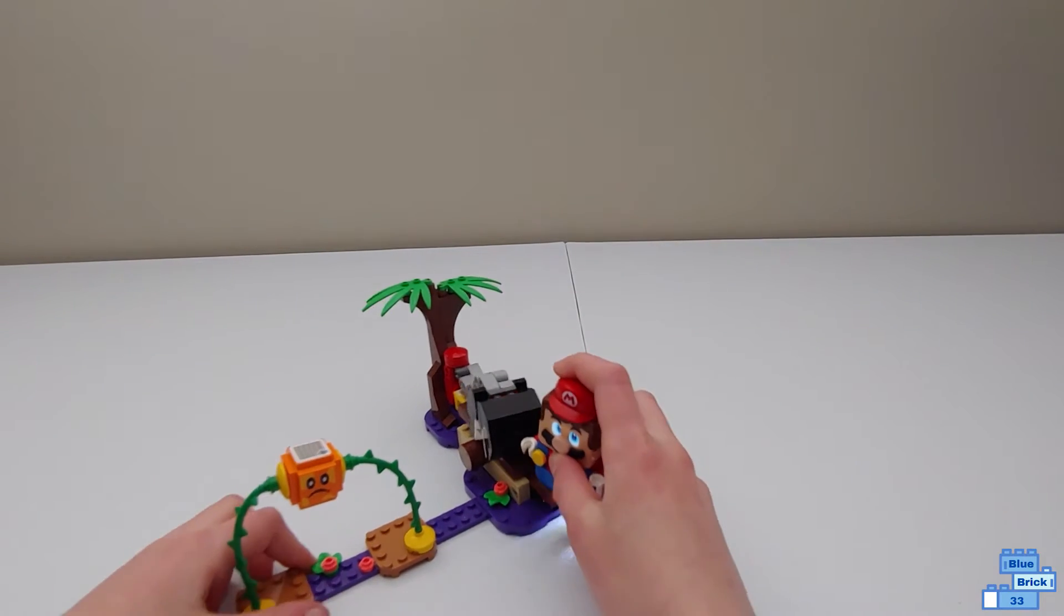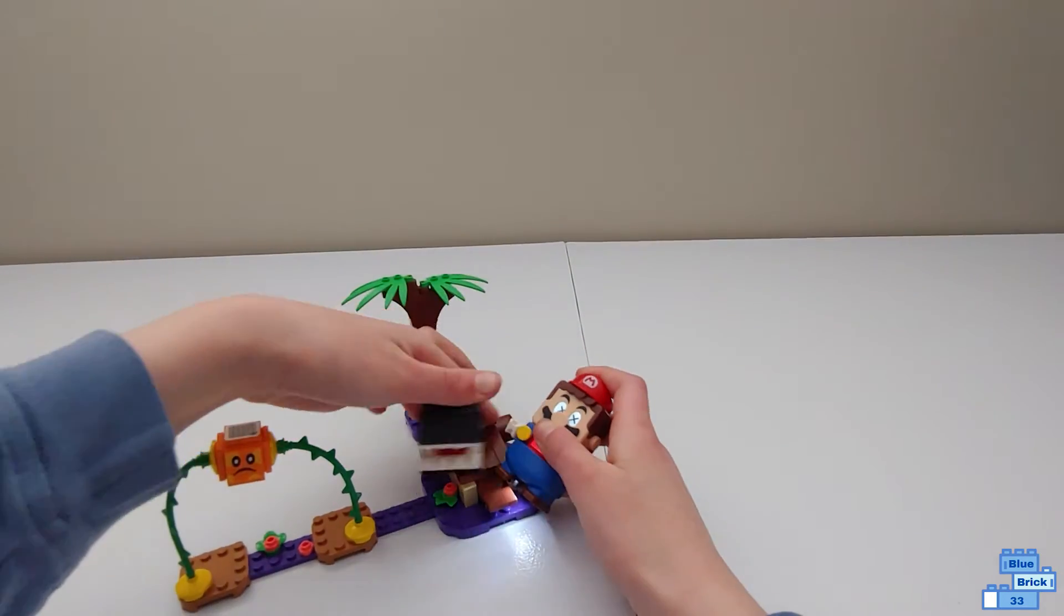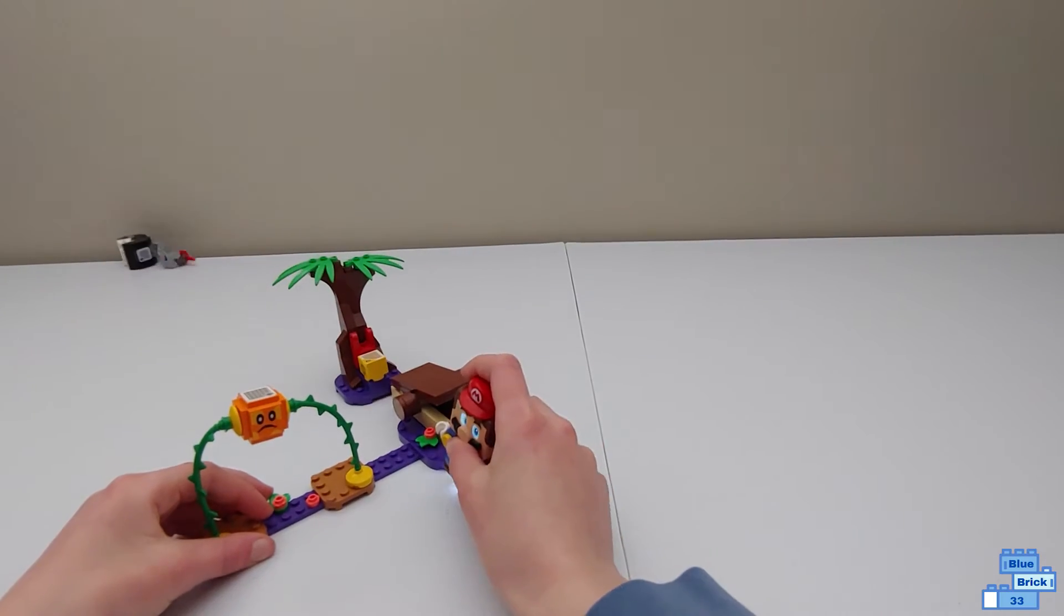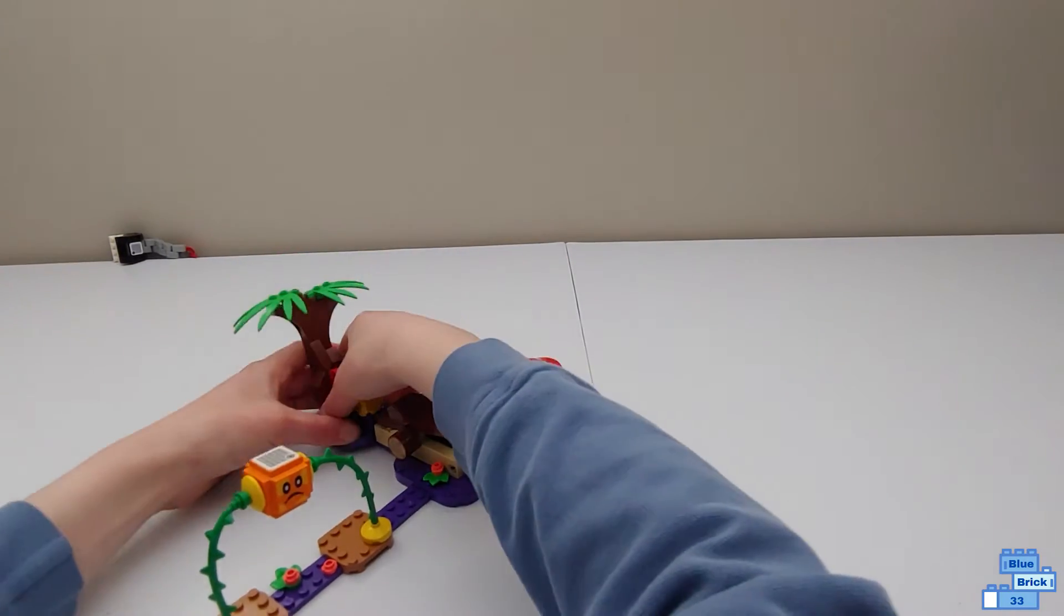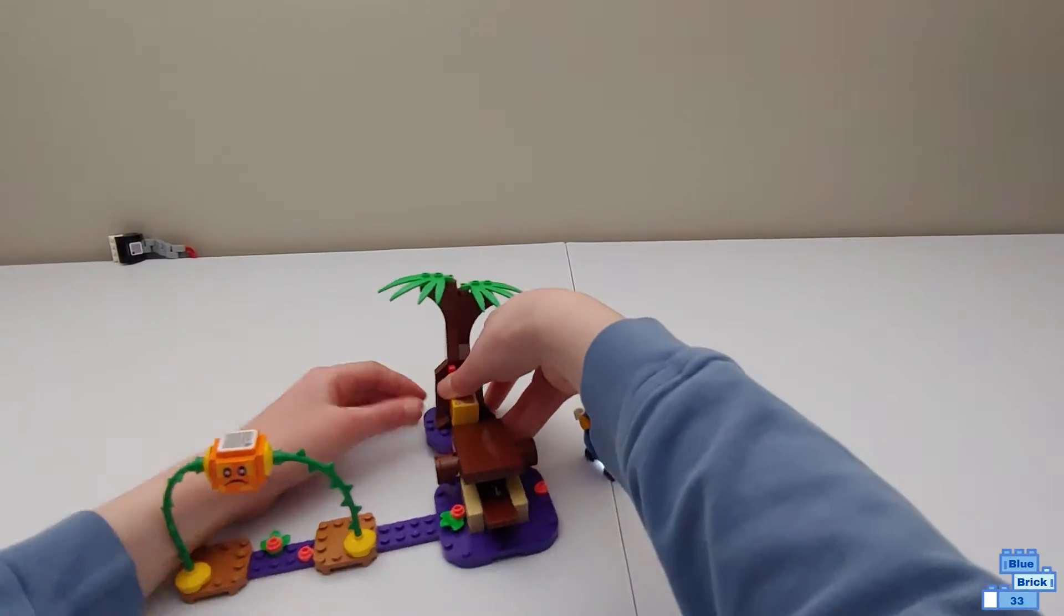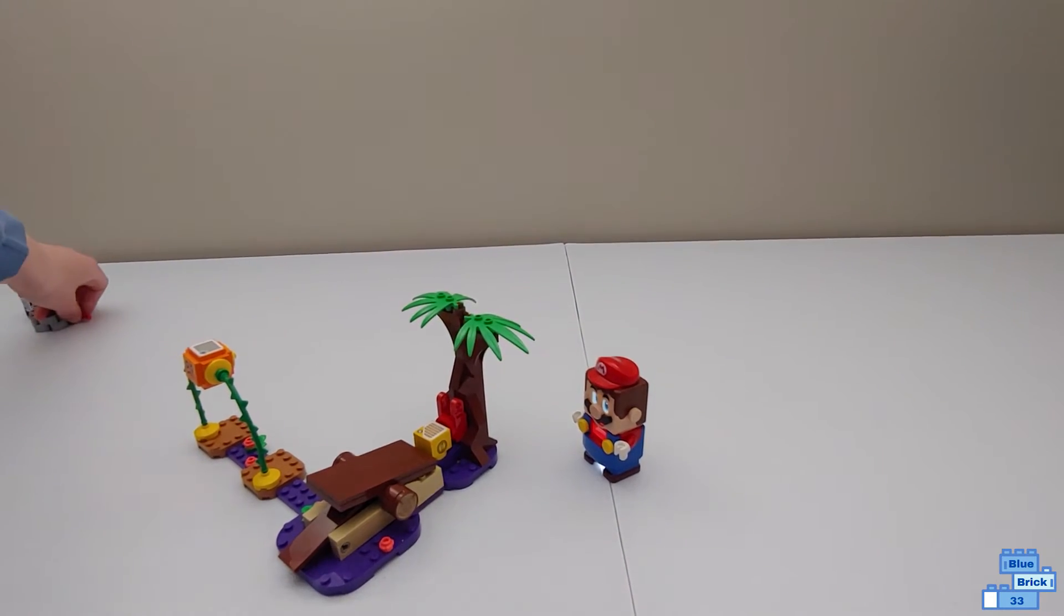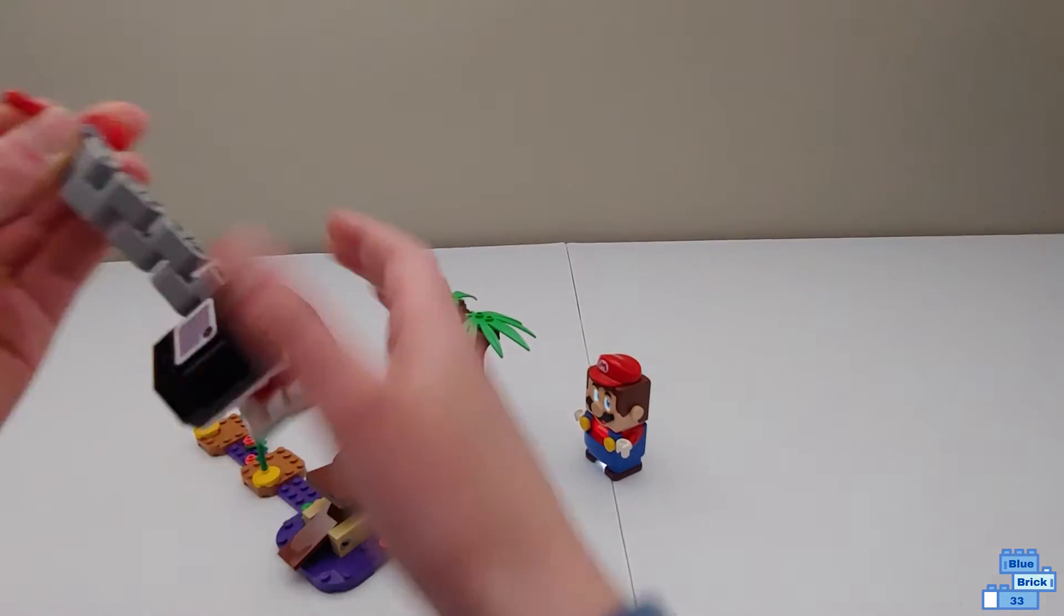Now what you do is you get Mario on this little lever and you go like this. And the Chain Chomp, it goes flying back, let's do that one more time after we retrieve our Chain Chomp.